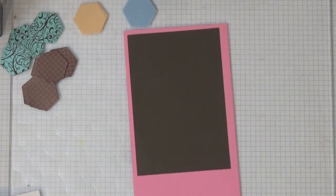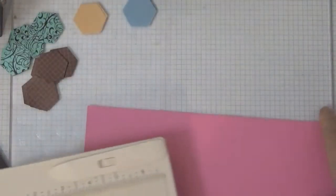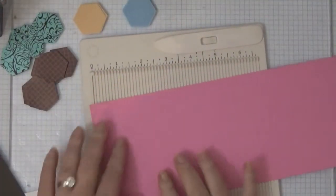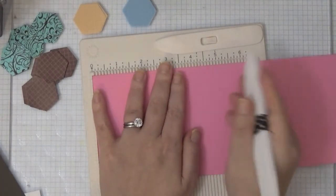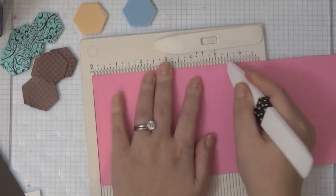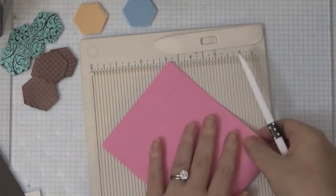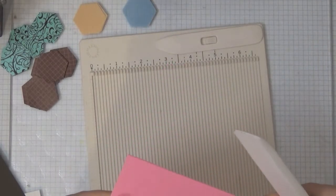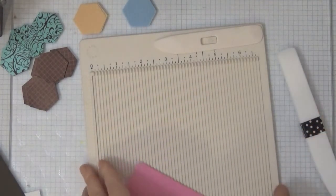The pink is the cotton candy and that'll be my card base today. I cut the hot fudge maybe half an inch or a quarter of an inch smaller, and the white piece about an eighth of an inch smaller than the hot fudge. I'm going to prep my card base, these are very thick weight cardstock so I really love it.